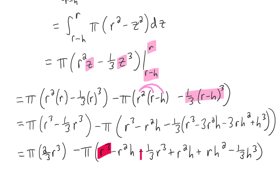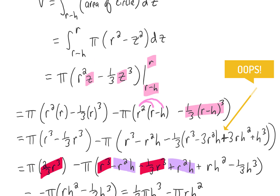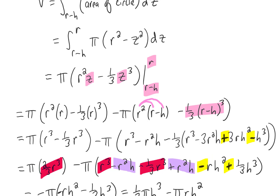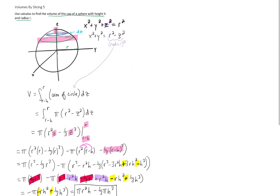Now we need to simplify. Distributing r squared through the parentheses and foiling out the big term, you'll notice that r cubed minus one-third r cubed is two-thirds r cubed, and those terms cancel. We also have a negative r squared h and a positive r squared h, so those two terms cancel as well. I noticed I made a sign mistake when expanding (r minus h) cubed — this term should be a minus and this term should be a plus. Fixing those signs and distributing the negative pi through the parentheses gives us our final answer. Sorry about that little mistake, but the answer is correct now.